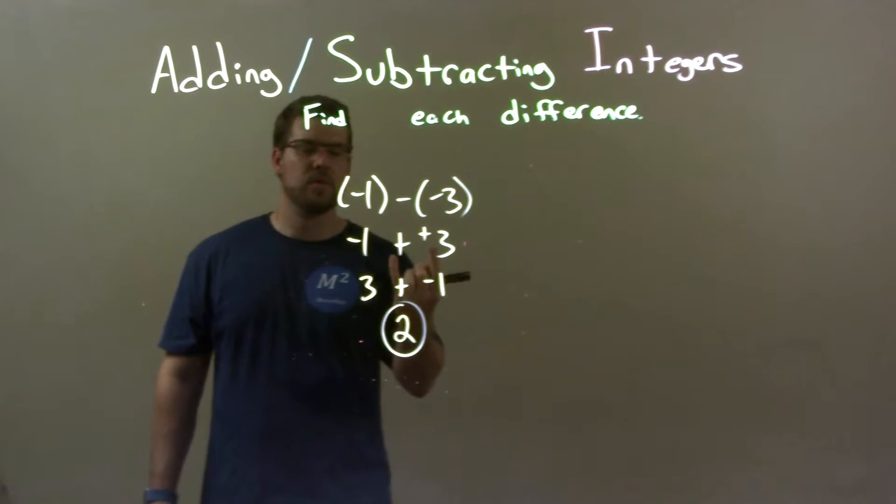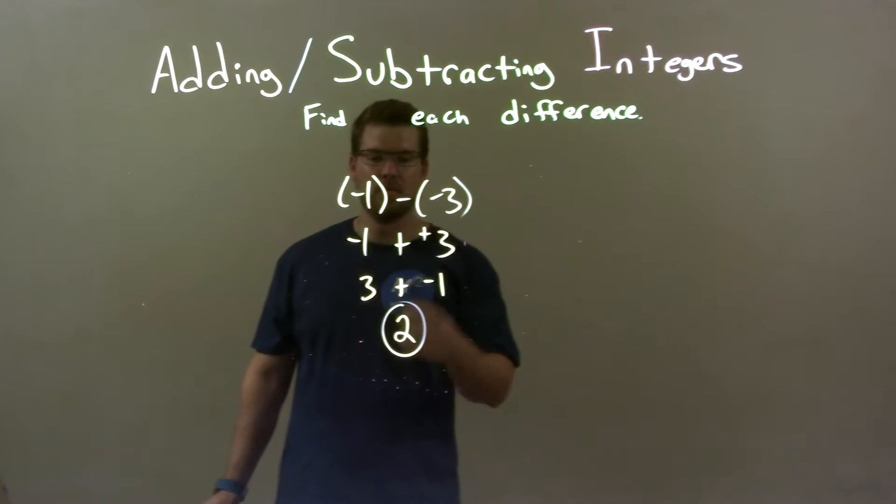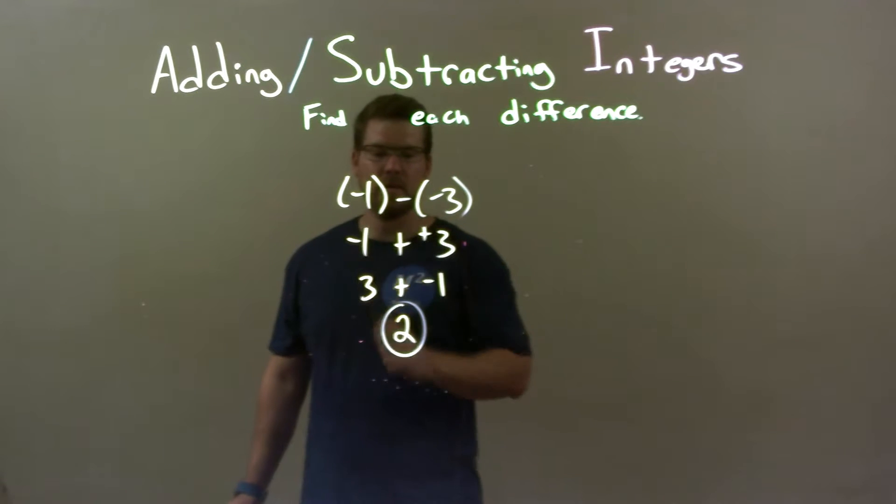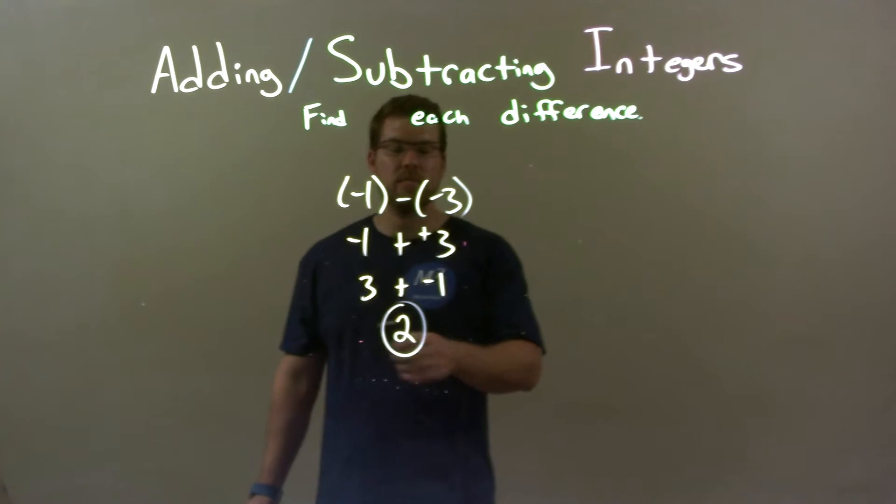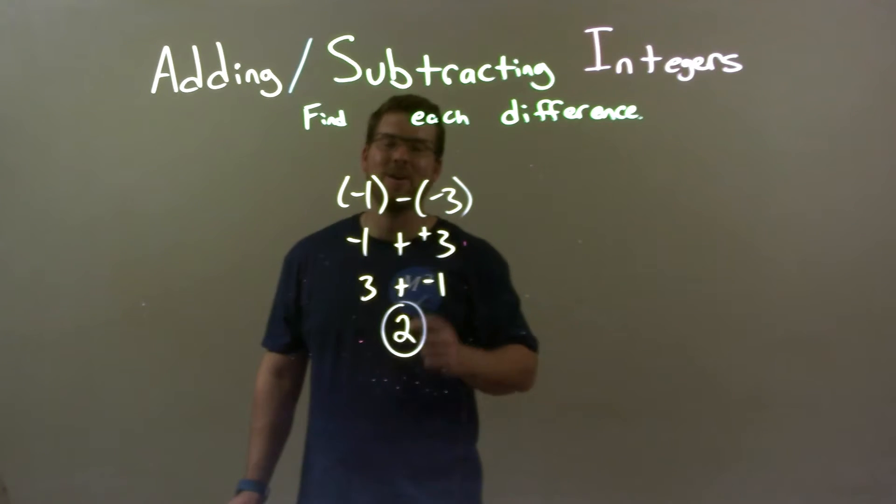Then I rearrange this, put 3 first because we can do that with addition. 3 comes first plus a negative 1. 3 plus a negative 1 is a positive 2. So, there we have our final answer.